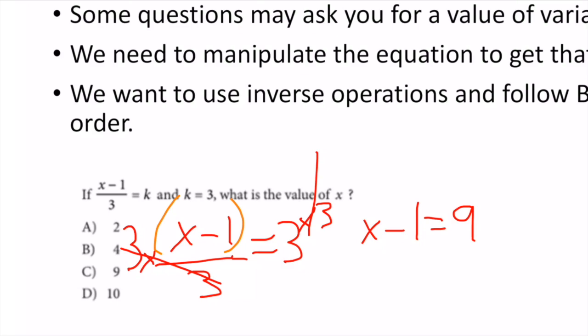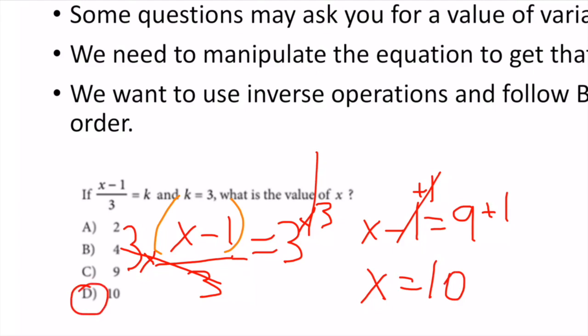I want x by itself, so I get rid of everything attached to it. I have a -1, so my inverse operation is to add 1. I do it to both sides and I'm left with x = 10. So D is the correct answer.